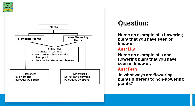Now let's answer a few questions. Name an example of a flowering plant that you have seen or know of. An example is lily — there are many more. Name an example of a non-flowering plant that you know or have seen.